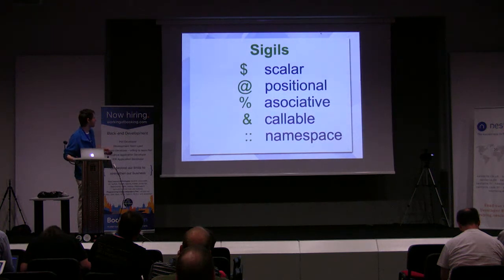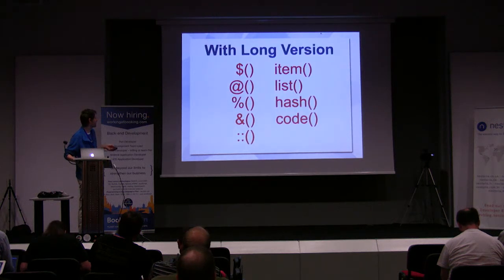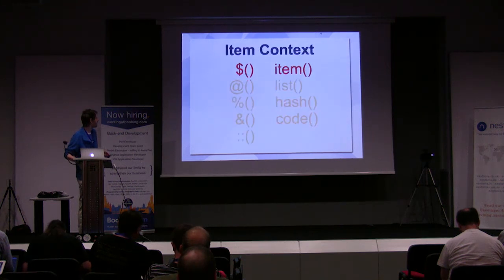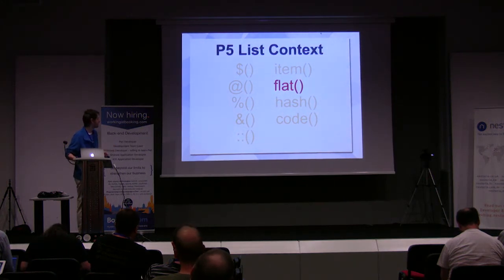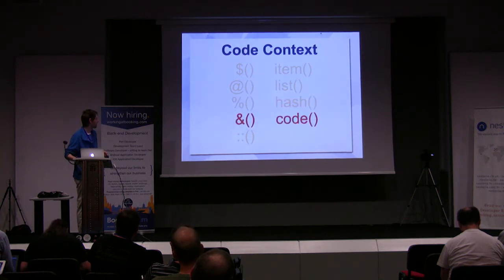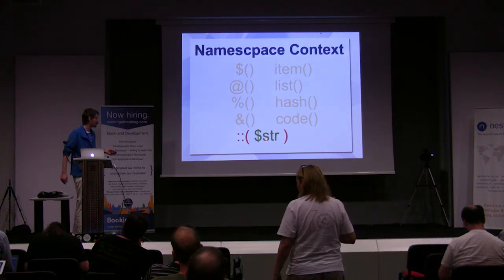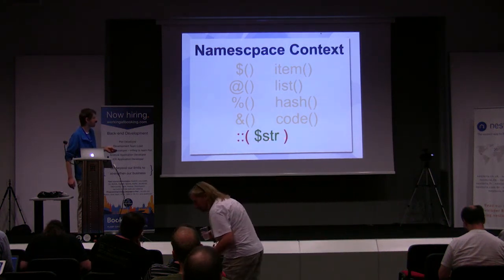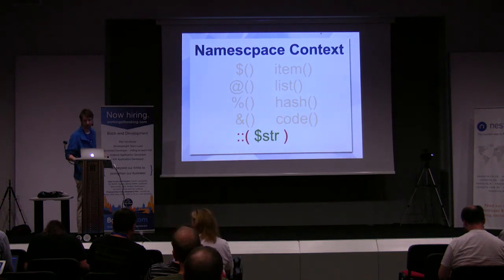We have two or three more context operators. You can use a short version or even the long version which does the same. The braces are optional. You can even have the flat context like in Perl 5 — you just spell it 'flat'. That's pretty much self-explanatory. This is really nice if you have a variable that is the name of a package and you want to use the content of a package as a package — so you dereference it as a package name.